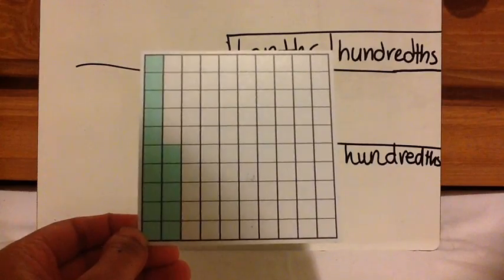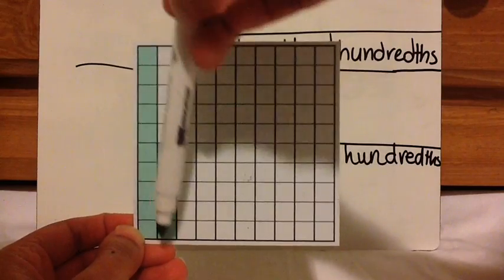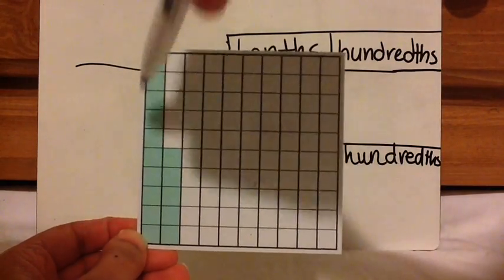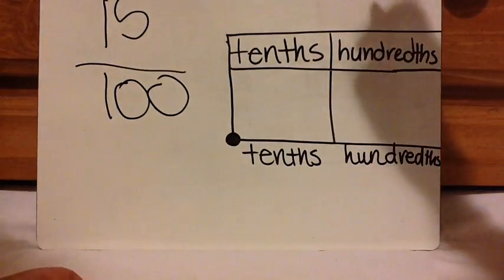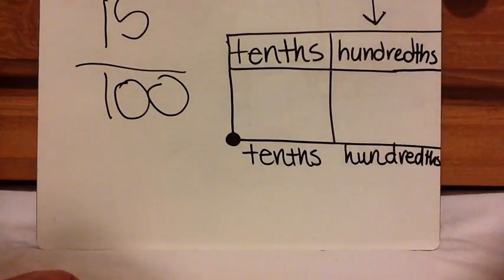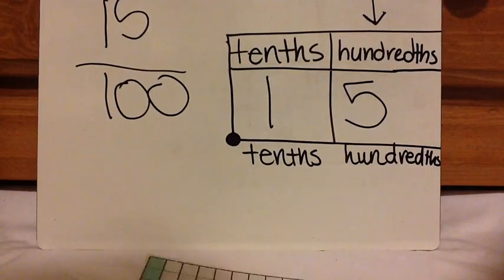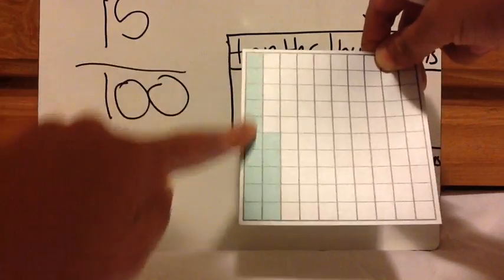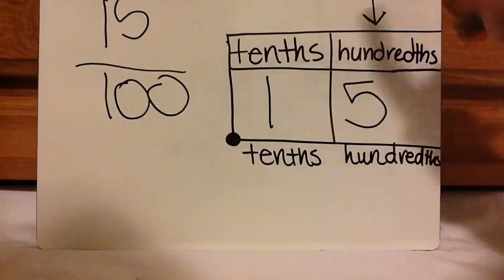Here is the next one. Press pause and then press play when you're ready to check. There are ten, eleven, twelve, thirteen, fourteen, fifteen shaded in out of one hundred. So it will be fifteen hundredths, which means I have to finish in the hundredths place. If you notice, there is one tenth — think of it as a dime and then five pennies. So one tenth and then five hundredths.